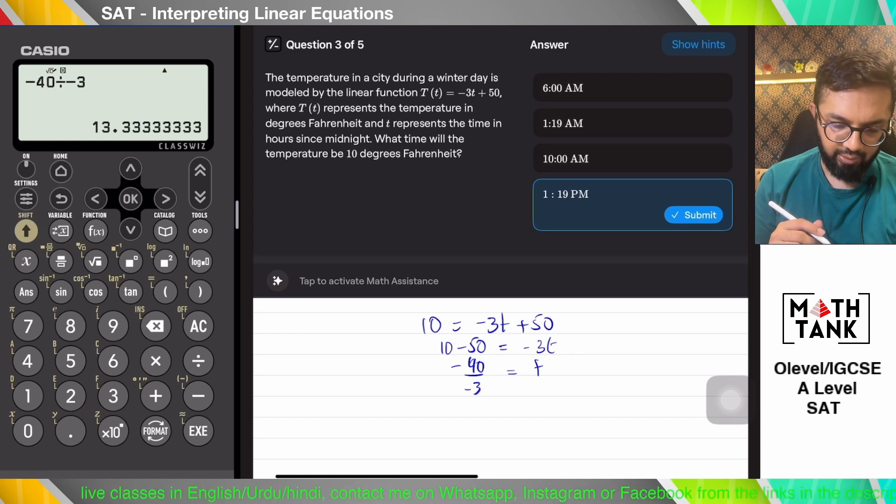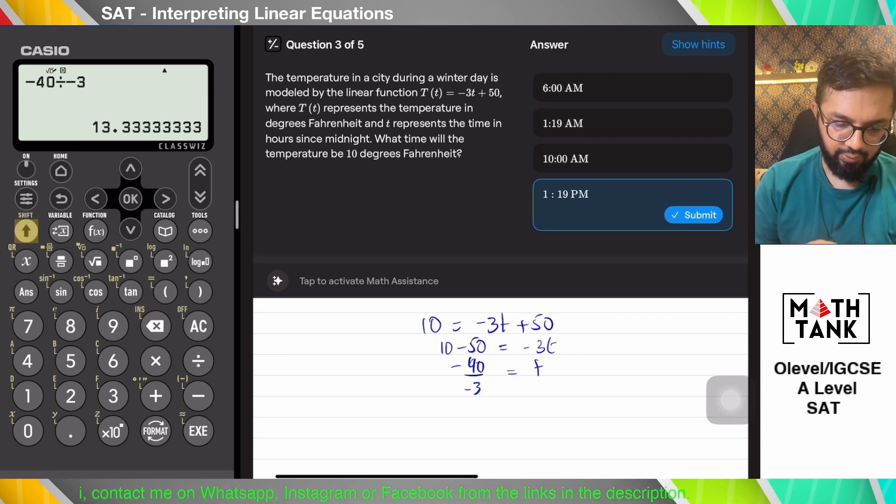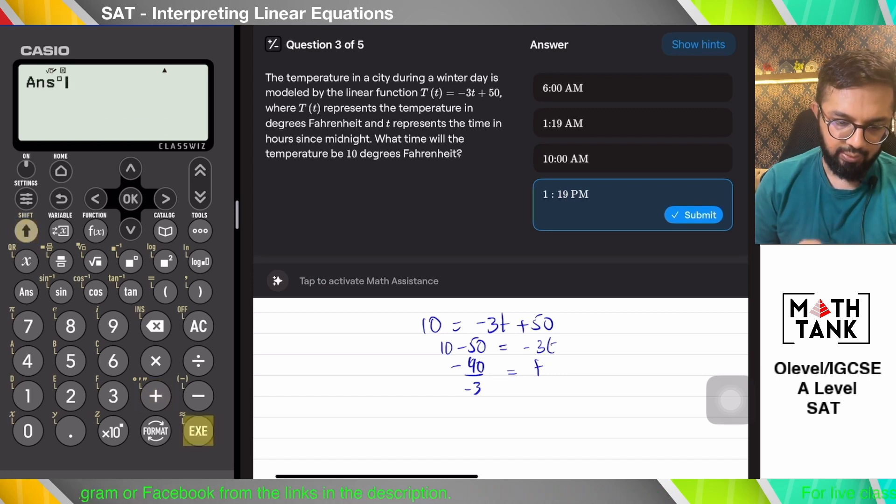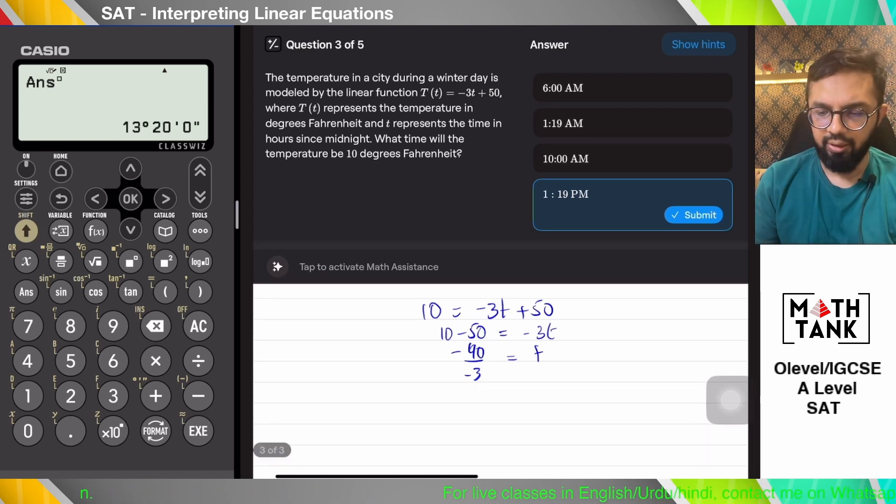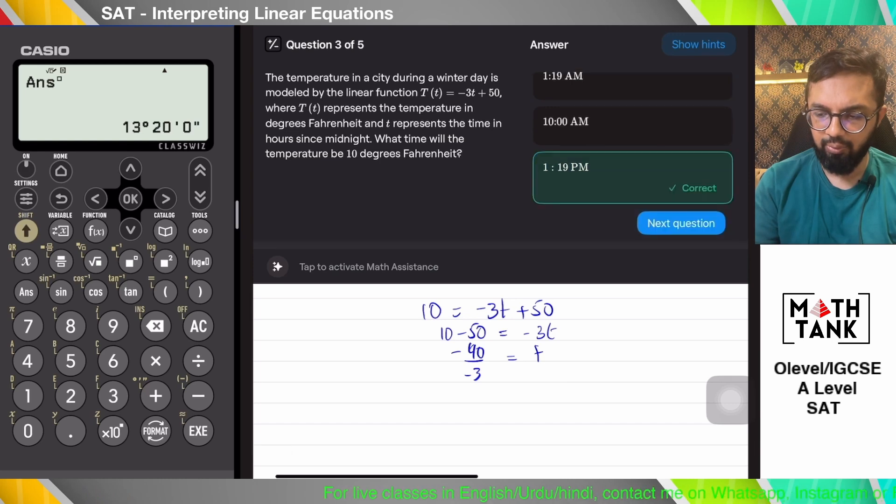There is a button on the calculator that changes this. Yes, I found it. So it's shift and plus. That gives you 13 hours and 20 minutes, about 1:20. But the answer option has 1:19, so I'm going to go with that.